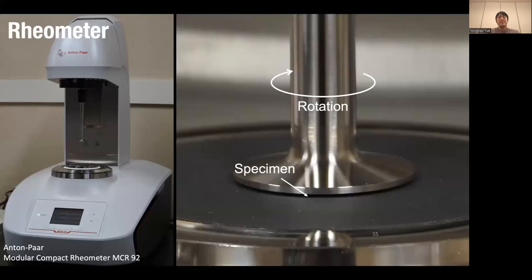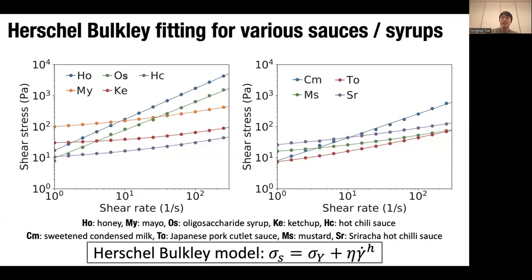A few years later, I got access to a rheometer — a device that accurately measures the flowing behavior of different materials. We measured the data, plotting shear rate against measured shear stress. We found we could nicely fit the measured data using the Herschel-Bulkley model. It covers honey, mayo, syrup, ketchup, hot chili sauce, condensed milk, pork cutlet sauce, mustard, and more.